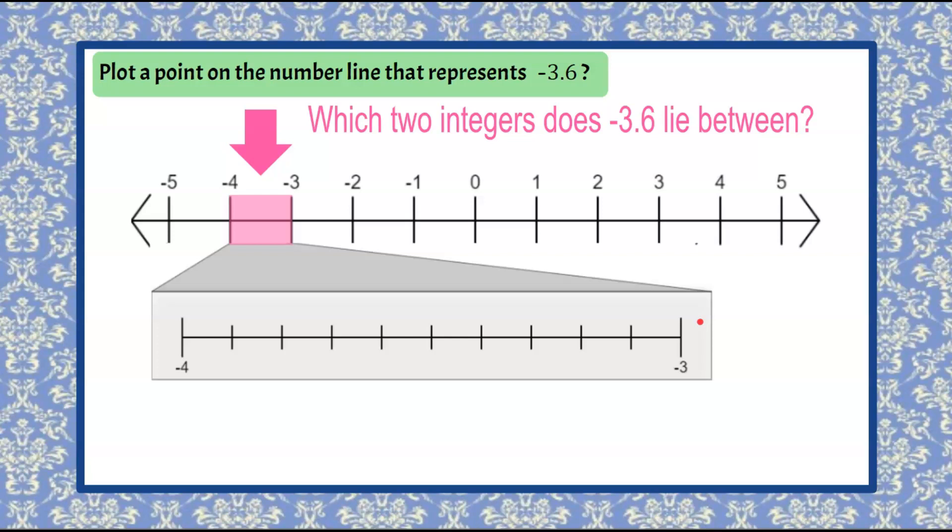So negative 3, negative 3.1, negative 3.2, negative 3.3, .4, .5, and negative 3.6 would be right here. We'd plot our point,